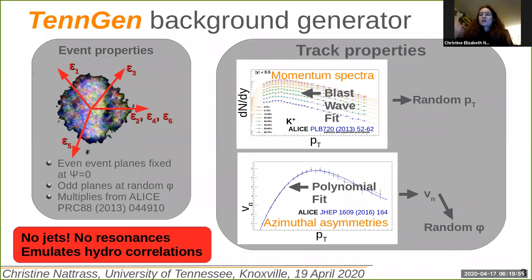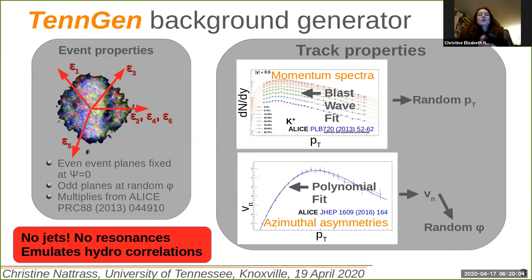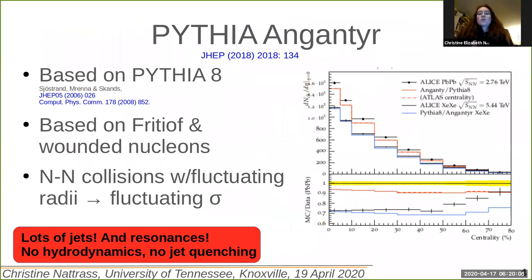We repeat this for the number of particles that we have measured to be in the events, matching the measured multiplicity. The Pythia-Angantyr model is pretty much the opposite extreme. There's no hydrodynamics and no jet quenching, but there are lots of jets and resonances. It is based on Pythia 8 and is pretty much a superposition of nucleon-nucleon collisions.